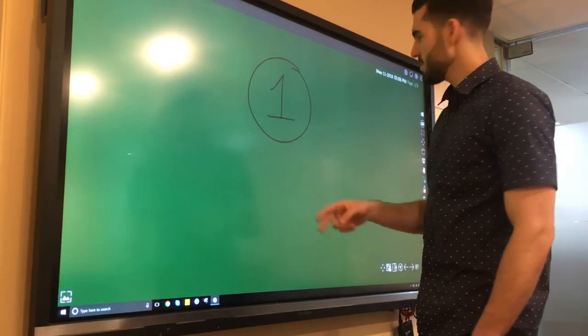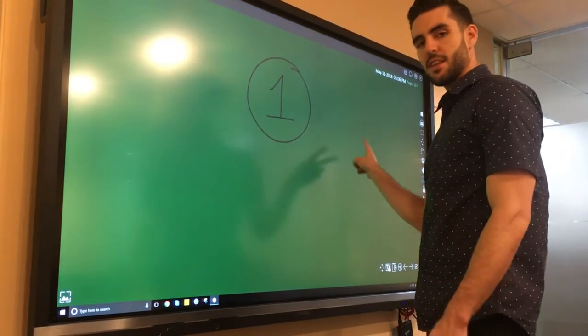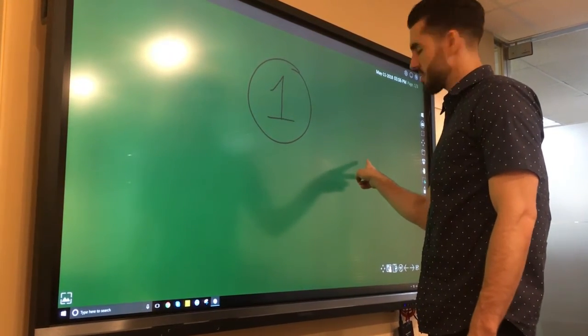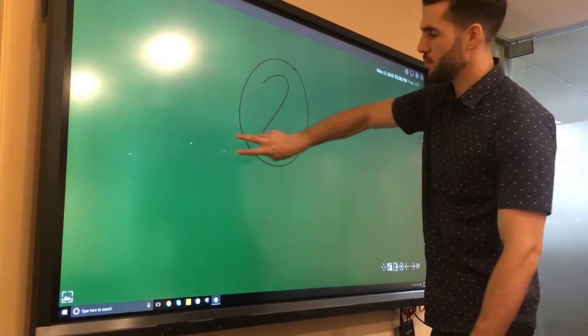As you can see, take two fingers, make sure you select the lasso tool over here, and then you can swipe over to page two just like this. There you go. Swipe back to page one.